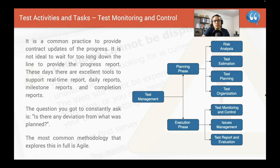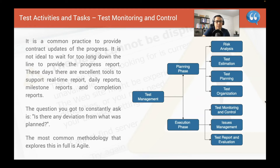Test monitoring and control - you have the planning phase and then the execution phase. In the planning phase you capture the risk analysis, test estimation, test planning, and test organization. In the execution phase you do the test monitoring and control, issue management - how you manage your bugs - and then the test reporting and evaluation: have I tested what I planned to test? It also depends on the methodology - waterfall, V-model, or agile - it might be slightly different.